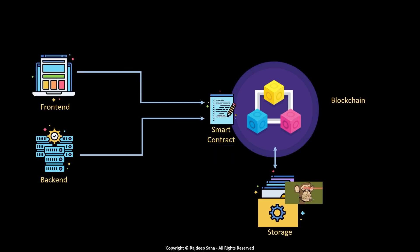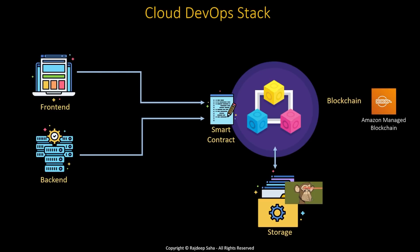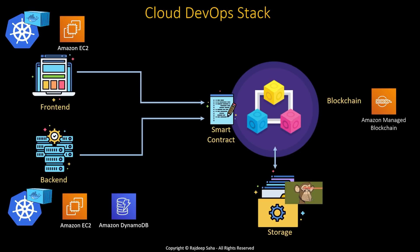Now how does cloud DevOps come into play? For blockchain, you can use Amazon Managed Blockchain. All cryptocurrency blockchains are open to anyone, but if you want to create a private blockchain where only pre-determined parties can interact, you can use Amazon Managed Blockchain. You can also join any public blockchain network using it. The front end and back end ultimately run some sort of code — the most popular option is Kubernetes using Docker containers, but alternatively you can run them on Amazon EC2, Lambda, etc. The back end will typically save some data, so you can use Amazon DynamoDB or other traditional databases. All your knowledge of DevOps, security, cost optimization, and other cloud DevOps concepts can be put to use in blockchain and crypto applications.